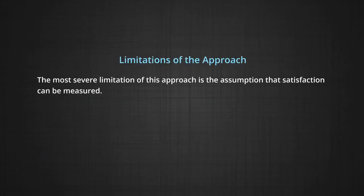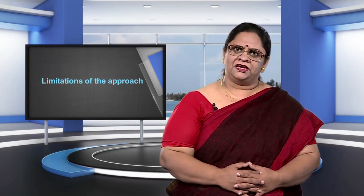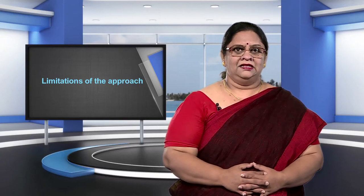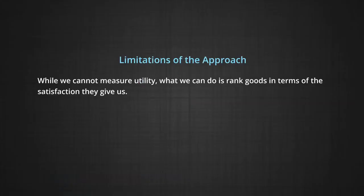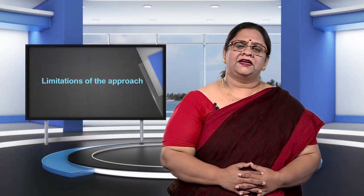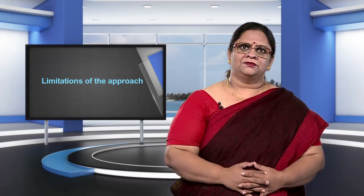The most severe limitation of this approach is the assumption that satisfaction can be measured. Can we really measure the satisfaction that we get from eating a pizza, a mango, or a banana? If utility cannot be measured, it would be difficult to give it a unit like utils, so measuring total utility and marginal utility becomes difficult. While we cannot measure utility, what we can do is rank goods in terms of the satisfaction they give us. So it is possible to say that I like mangoes more than bananas, or more specifically, I like 2 mangoes as much as 3 bananas. Such an approach allows me to rank commodities in the order in which I like them without having to measure the utility of any individual unit of a commodity.